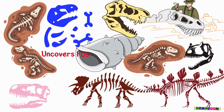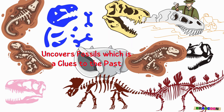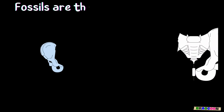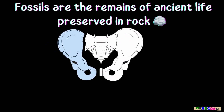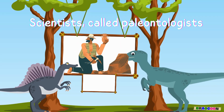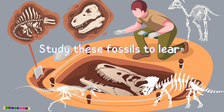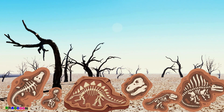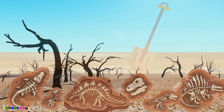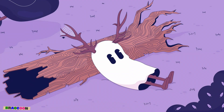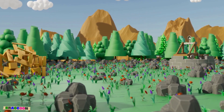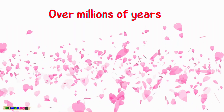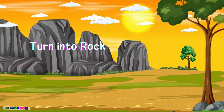Stage 7 uncovers fossils — clues to the past. How do we know so much about dinosaurs? Through fossils. Fossils are the remains of ancient life preserved in rock. Scientists called paleontologists study these fossils to learn about dinosaurs' lives. When a dinosaur or another animal dies, sometimes its bones or even its footprints get buried underground. Over time, layers of dirt and rocks cover them up, kind of like when you bury a treasure in the sand at the beach. Over millions of years, all that buried stuff can turn into rock.